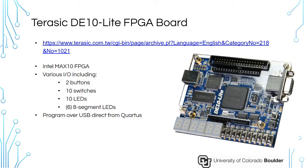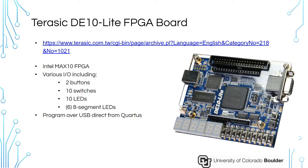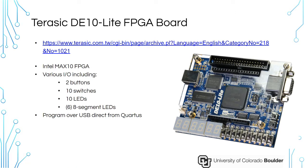The TerasIC DE10 Lite board is a very inexpensive board that we will be using for this class. It has a Max 10 FPGA on it, and a subset of features we're going to use in the class are buttons — there's two buttons that you can see in the lower right here. There are up to 10 switches that we can use, a set of 10 LEDs right above those switches, and to the left are six different eight-segment LEDs that we could put numbers up, for example. That's pretty much all we need to use in this class.